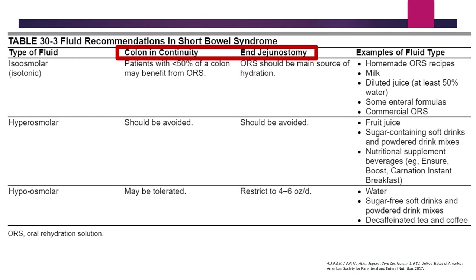For hypoosmolar or hypotonic fluids such as water, sugar-free soft drinks, powdered drink mixes, and decaffeinated tea or coffee: these are generally tolerated in colon-in-continuity patients, but restricted to about 4 to 6 ounces per day in end jejunostomy patients due to their hypotonic nature. Most hydration for end jejunostomy patients should come from oral rehydration solutions.